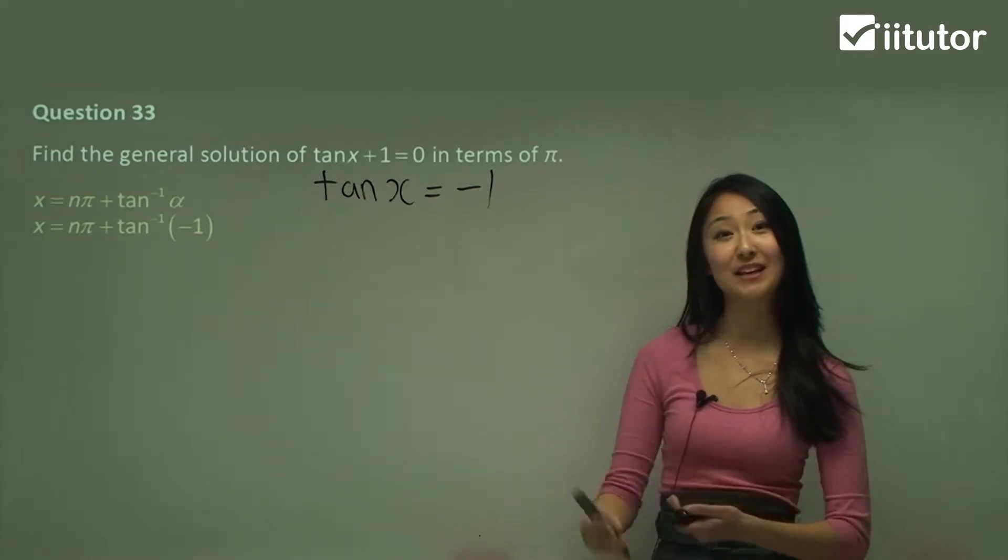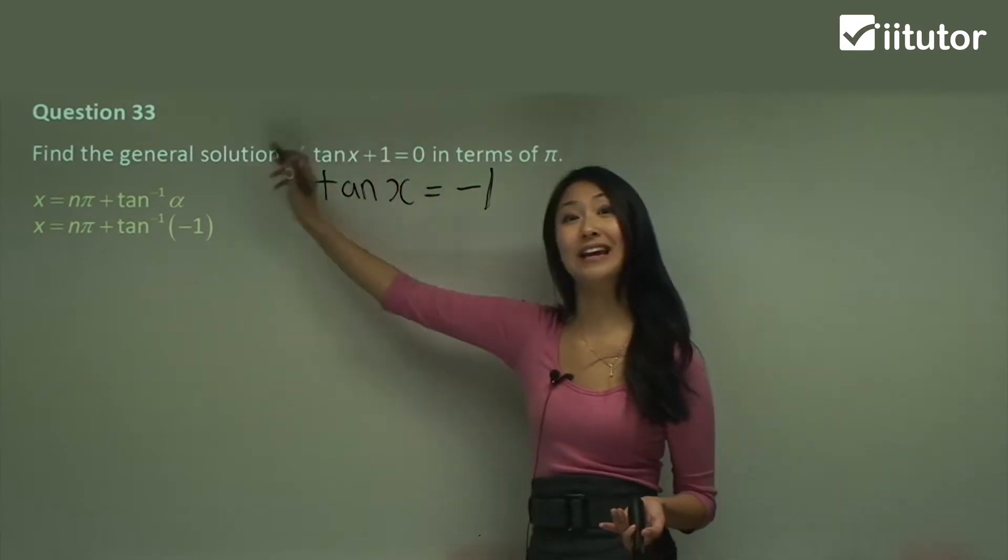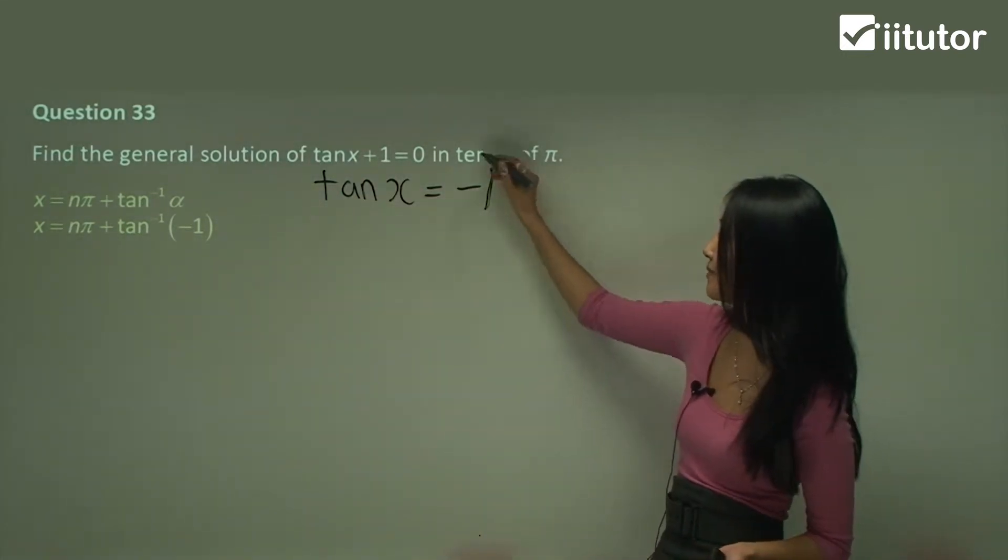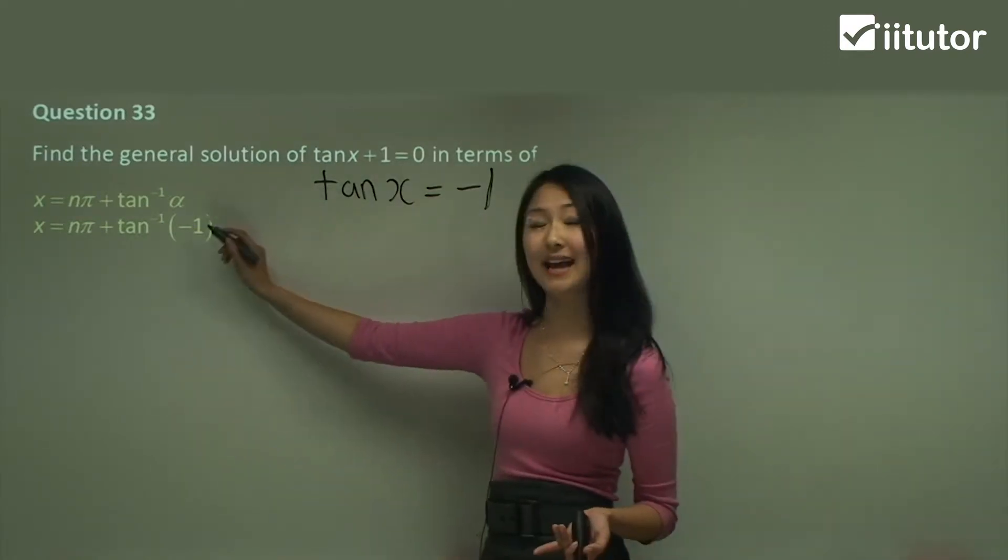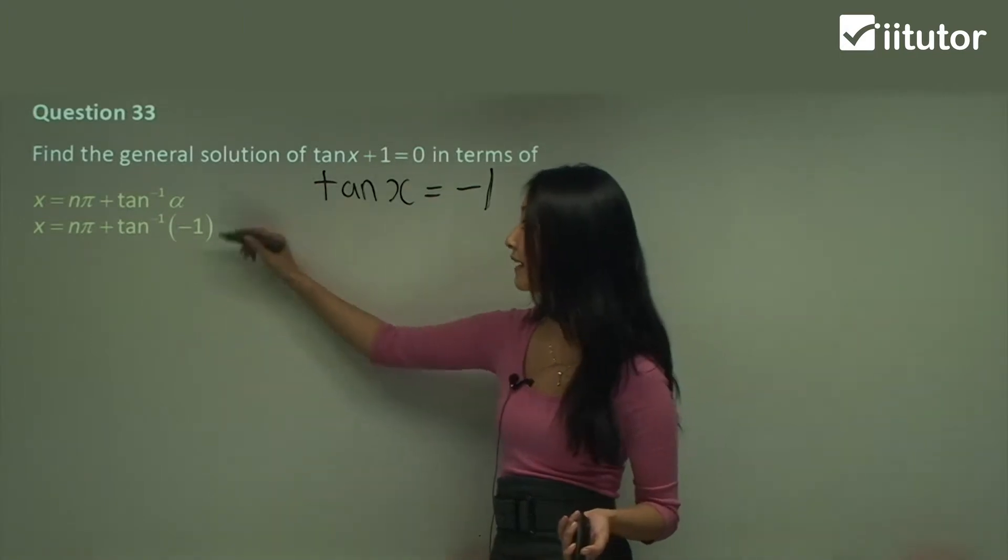A lot of the times I'll give you the equation and you need to rearrange it to be able to substitute it into the general solution. So now we can substitute negative one into alpha and we think to ourselves, the tan of what gives us negative one?